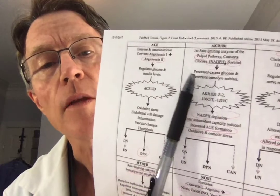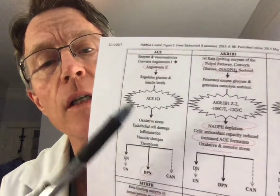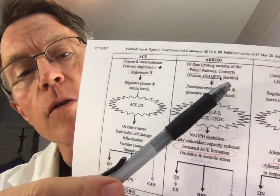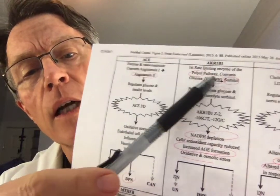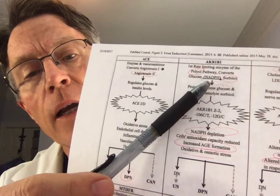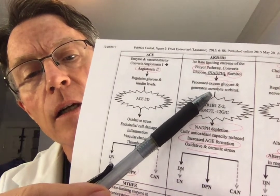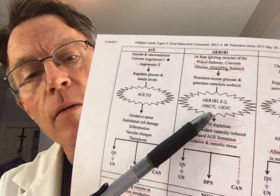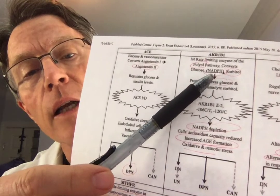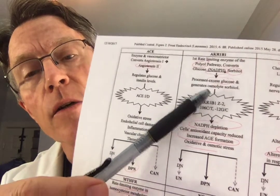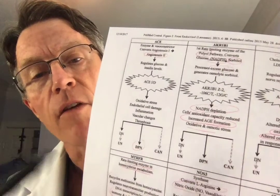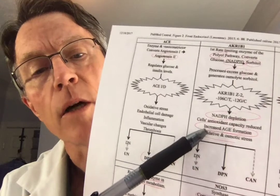AKR1B1 is associated with polyols and sorbitols. This is a mitochondrial issue, and when you're looking at mitochondrial function, you're looking at NADPH or NAD and the oxidative phosphorylation process.